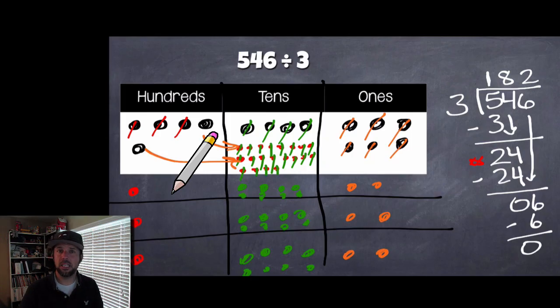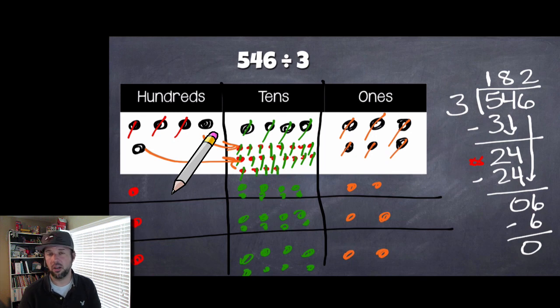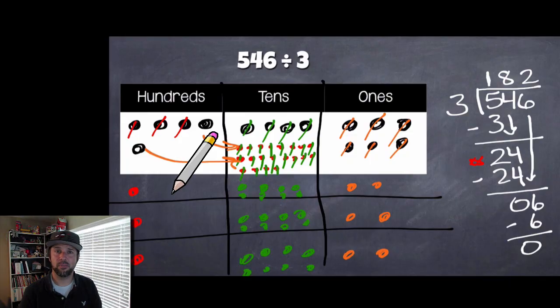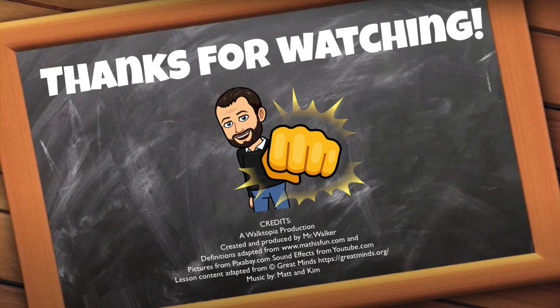Alright guys, we divided three-digit dividends by a divisor today using two different strategies — the place value model and the standard algorithm. We did an awesome job. If you have any questions, comments, or concerns, please reach out. I appreciate you following along. I've got a lot of sugar coursing through me right now, so I need some water to wash down all that Sour Patch Kid sugar. Thank you, have a great rest of your day — we'll talk to you soon!